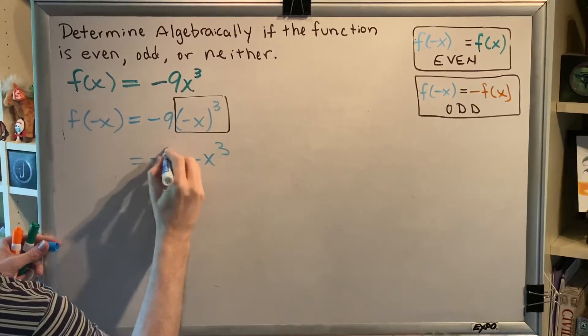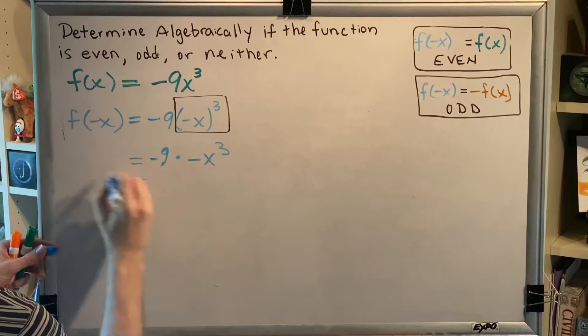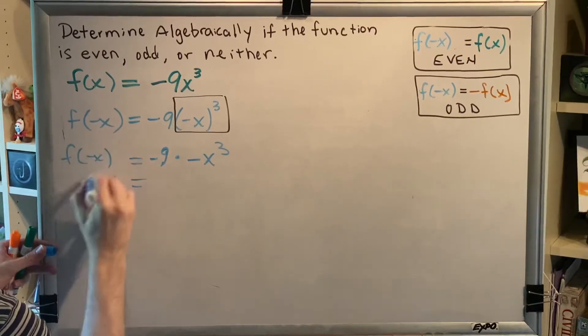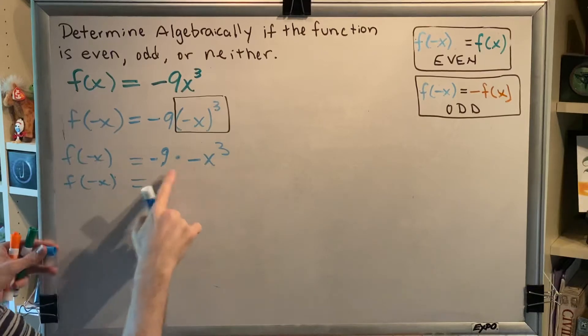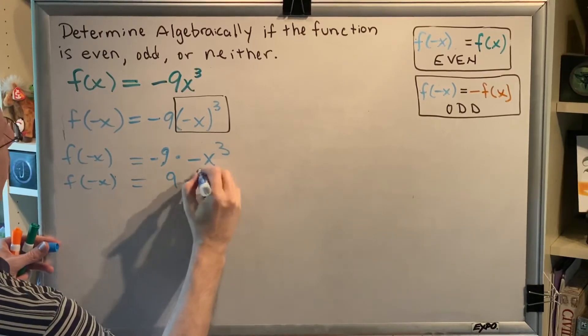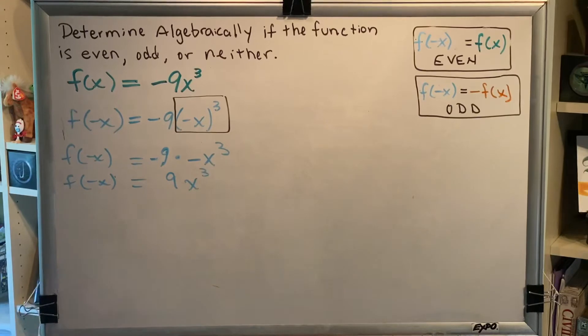And then, of course, outside the box, we still have this negative 9, which is multiplying. Now, multiply these together. A negative times a negative is a positive. And so that gives us 9x cubed.